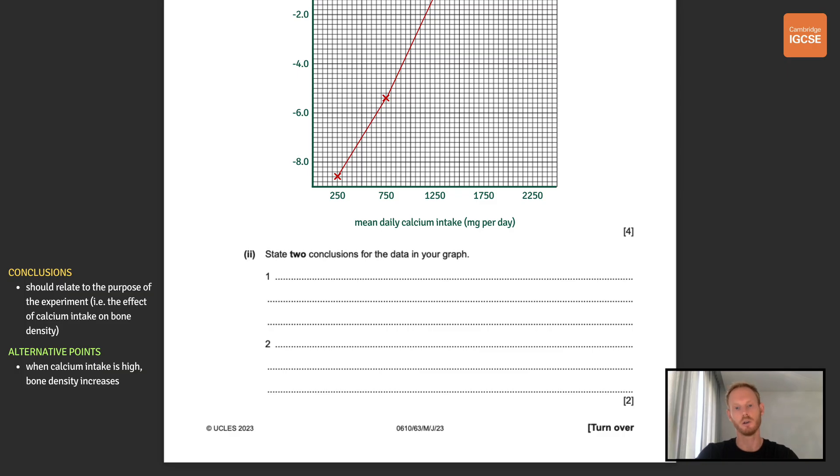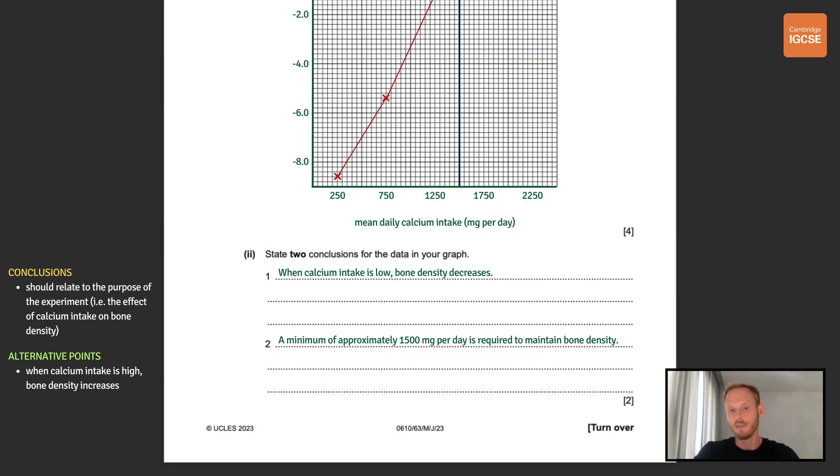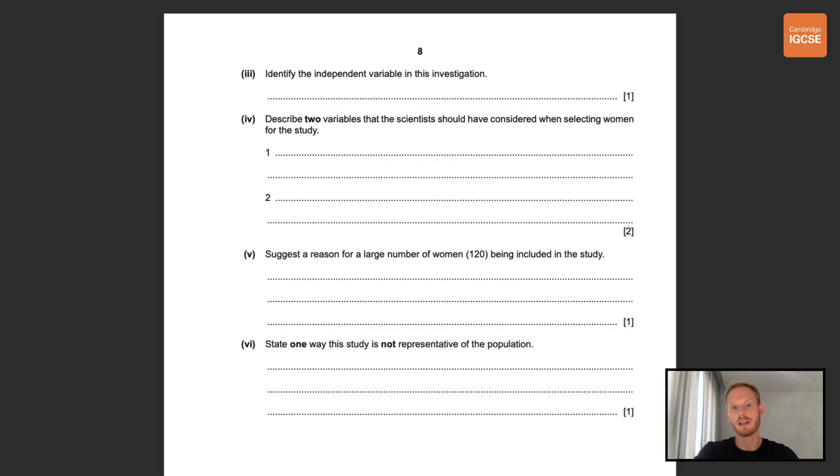Next you need to state two conclusions for the data in your graph and remember conclusions should always relate to the purpose of the investigation which in this case is the effect of calcium intake on bone density. The conclusions I've gone for are when calcium intake is low bone density decreases and a minimum of approximately 1500 milligrams per day is required to maintain bone density. Now another way of putting this is that there is no change in bone density at approximately 1500 milligrams. If we take a look at the graph again and draw a horizontal line from zero on the y-axis we can see that it intersects with our line at 1500 milligrams of calcium per day. Another slightly more obvious conclusion we could have made is that when calcium intake is high bone density increases.